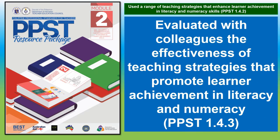This is a non-classroom observable indicator (NCUI) for our master teachers. Even though it is not required for master teachers to demonstrate this during classroom observation like Teacher 1 to Teacher 3, master teachers must still show that they have properly guided their mentees in using strategies to promote literacy and numeracy in the classroom. So master teachers must also know the examples to achieve this objective.